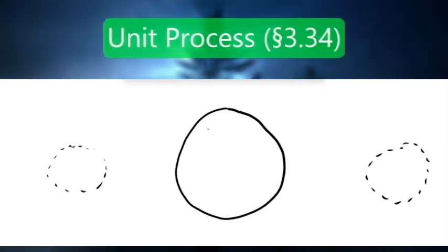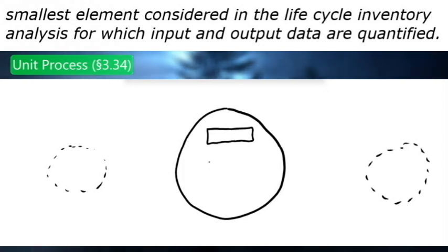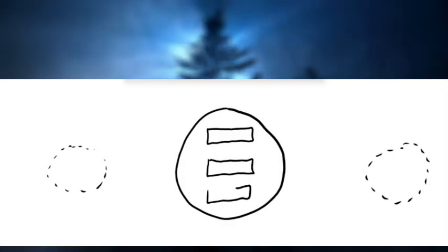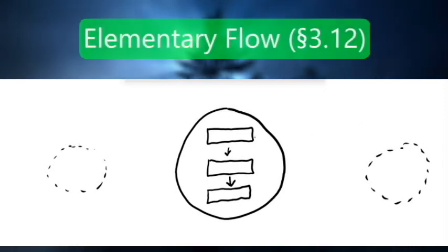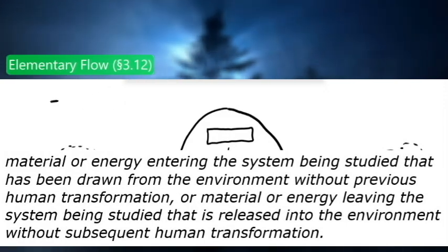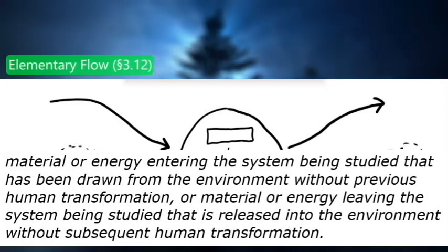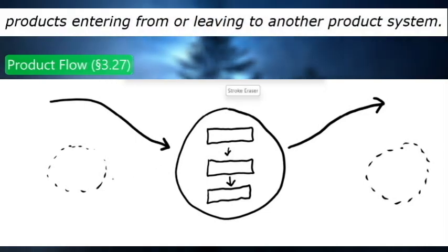A unit process is the smallest element considered in the life cycle inventory analysis, for which input and output data are quantified. An intermediate flow is a product, material, or energy flow occurring between unit processes of the product system being studied. An elementary flow is material or energy entering the system from the environment without previous human transformation, or leaving the system into the environment without subsequent human transformation — including things like raw materials entering or raw pollution leaving across the system boundary. A product flow consists of products entering from or leaving to another product system, including intermediate products.